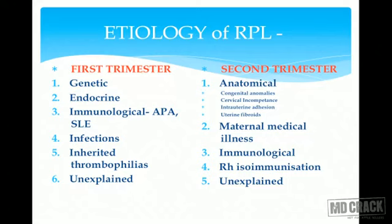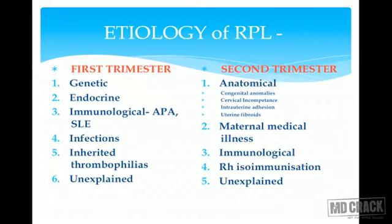For the etiology of recurrent pregnancy losses: in first trimester, genetic cause is most common, followed by endocrine causes like luteal phase defect and diabetes, immunological causes, inherited thrombophilias, and unexplained causes. Infections may cause second trimester abortions, but we are not talking about TORCH infections here. Second trimester RPL is mainly due to anatomical causes like congenital anomalies — septate, bicornuate, unicornuate uterus — cervical incompetence, intrauterine adhesions, and maternal medical illnesses.